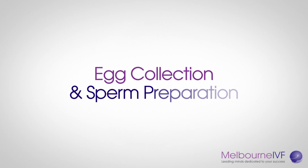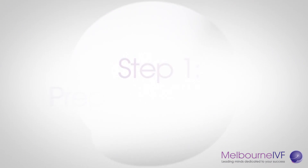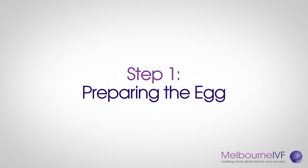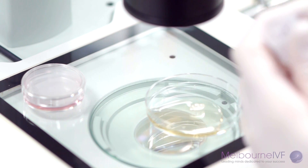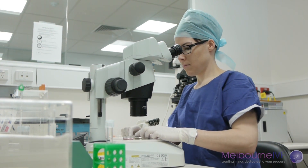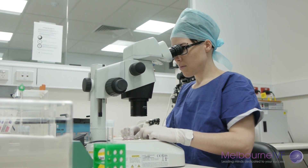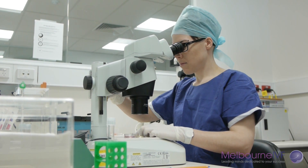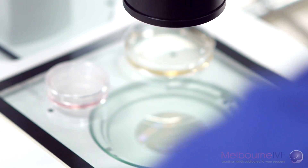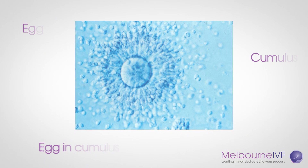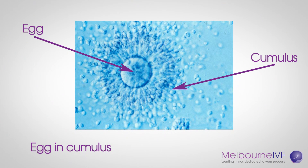Egg collection and sperm preparation. Step 1: Preparing the egg. For the egg collection, fluid from the ovary called follicular fluid is removed and examined by the embryologist, who isolates the mature eggs, only about one-tenth of a millimetre in diameter. The embryologist identifies the eggs by a large mass of cells and material called cumulus, which surrounds the egg during ovulation.